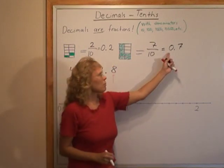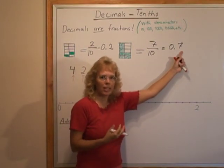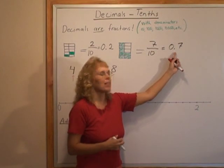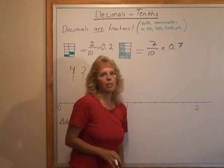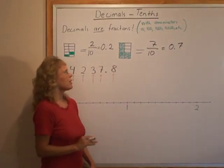The decimal here can be read as 7 tenths, and then many people just say it as 0.7 — either way, or however your teacher wants you to say it.